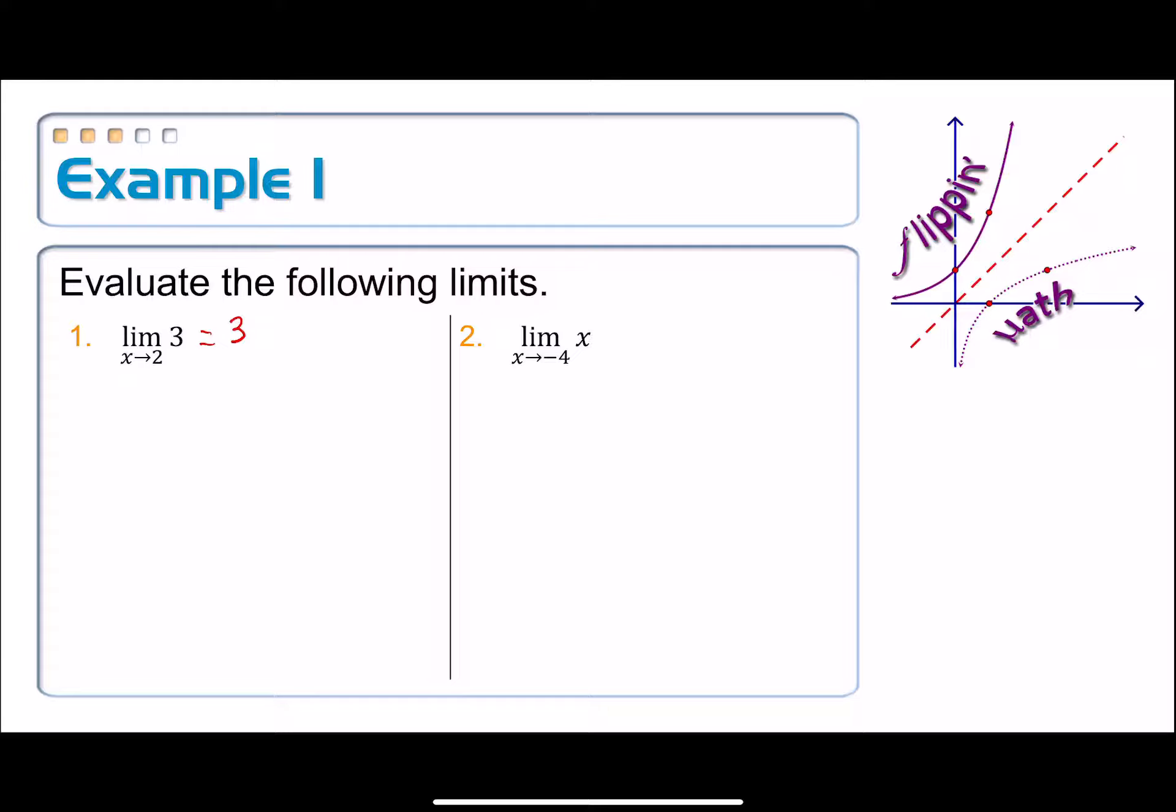Okay, let's look at number 2. Limit as x approaches negative 4 of x. Well, again, the first thing that I want to try to do is direct substitute in my negative 4 for x, and I get negative 4. Done.